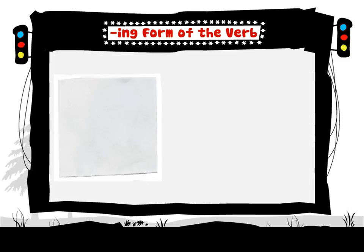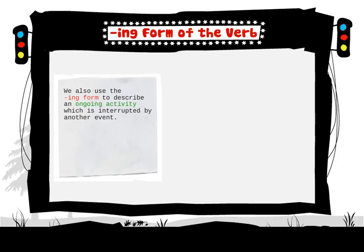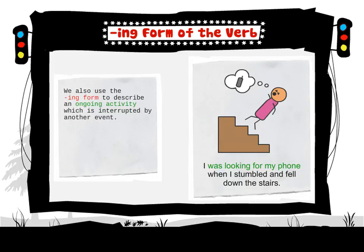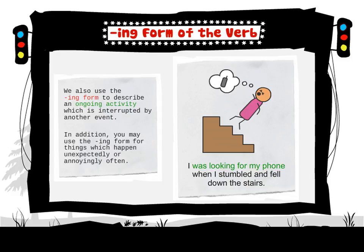We also use the ING form to describe an ongoing activity which is interrupted by another event. For example: 'The phone rang while we were eating.' 'I was looking for my phone when I stumbled and fell down the stairs.'